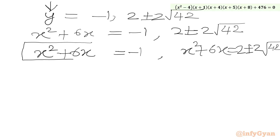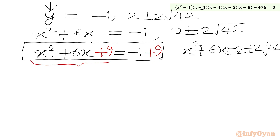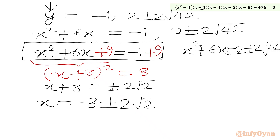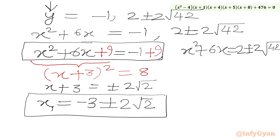Let us solve the first quadratic equation x² + 6x = -1 using completing the square. Adding 9 to both sides gives (x + 3)² = 8. Taking the square root: x + 3 = ±2√2. Subtracting 3 from both sides gives our first two real solutions: x₁ = -3 + 2√2 and x₂ = -3 - 2√2.